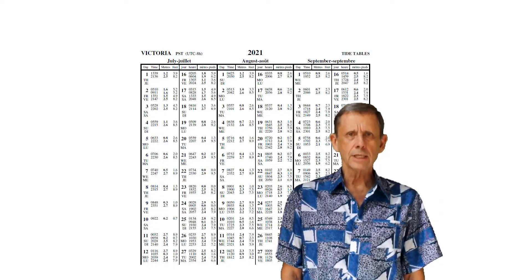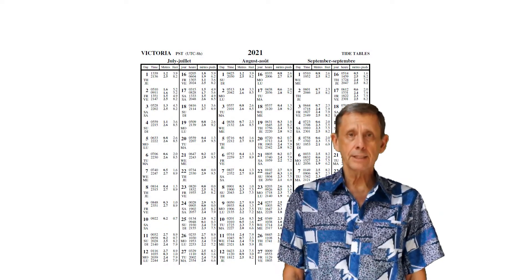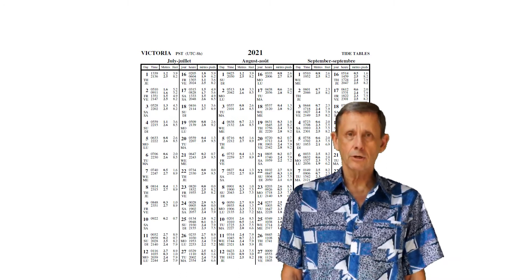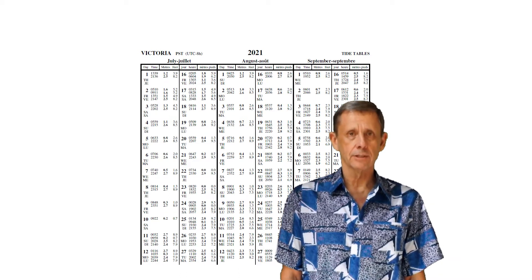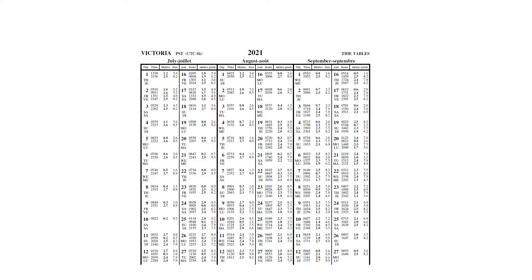In the last lesson, we looked at tide heights and how to read the tide tables in the Tides and Currents Tables published annually by the Canadian Hydrographic Service. The tide tables provide the times and heights of the highest and lowest tides for every day in the year. The heights are given in both feet and meters. You can also interpolate between the high and low tides to determine intermediate heights.